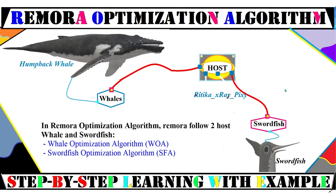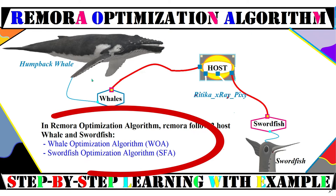In the Remora Optimization Algorithm, remora will follow two hosts: the humpback whale and the swordfish. Here we will use two optimization algorithms — the Whale Optimization Algorithm (WOA) and the Swordfish Optimization Algorithm (SFO) — for the remora position update in the search space.